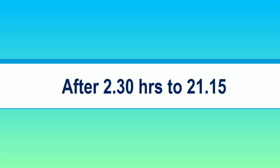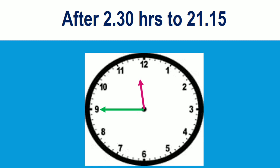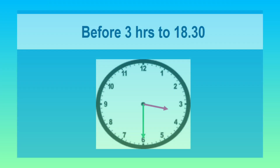Next one: after two hours thirty, to twenty one fifteen minutes. Pause the video. What is the answer? Quick — do it fast. Yes, the time is eleven forty five. Next one: before three hours, eighteen hours thirty minutes — that is the railway time. What comes here? Yes, the time is fifteen thirty — three hours thirty minutes. Correct, children!